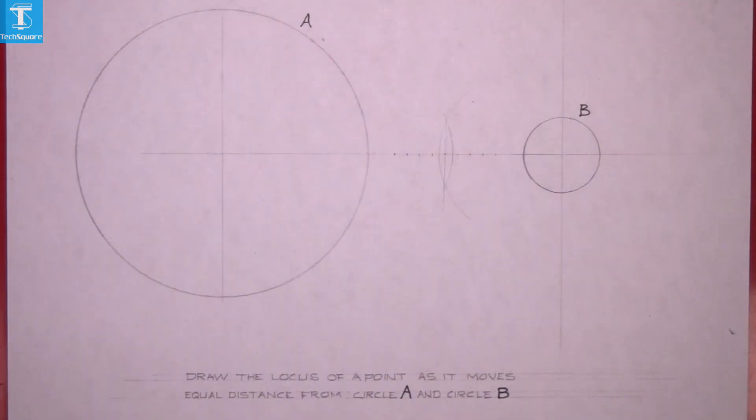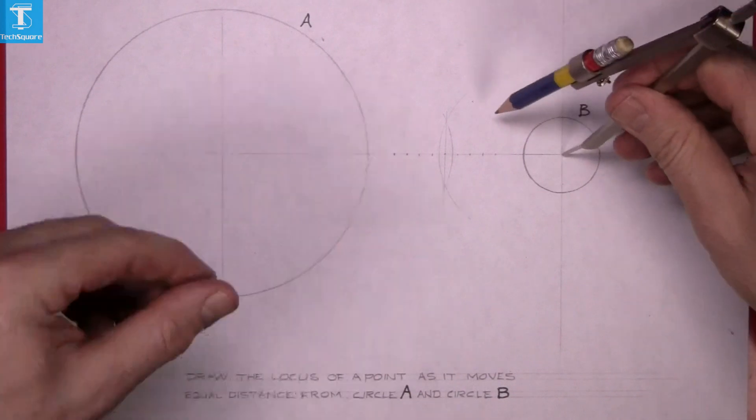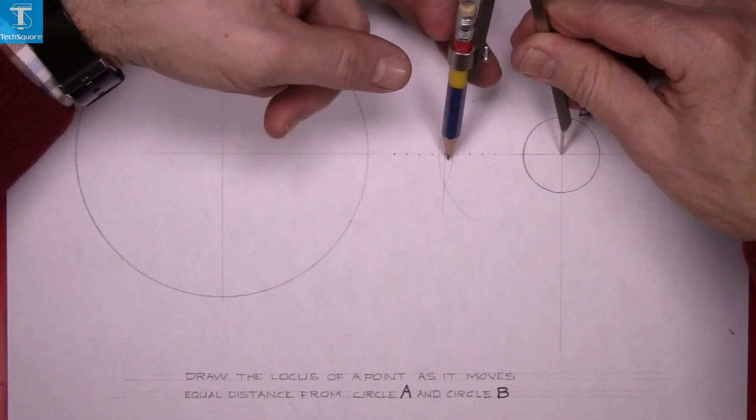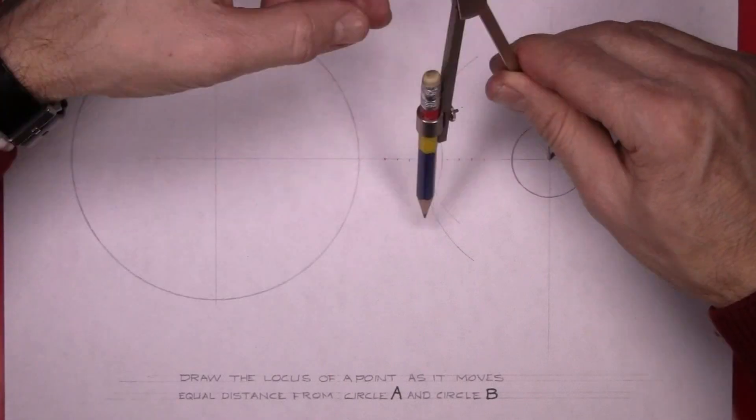And then using the compass in the center of circle B here, set it out to midpoint and then go one past midpoint to the first point and draw your arc.